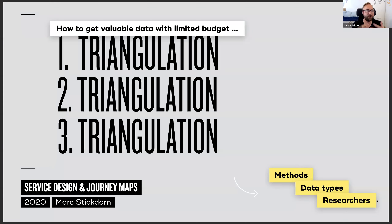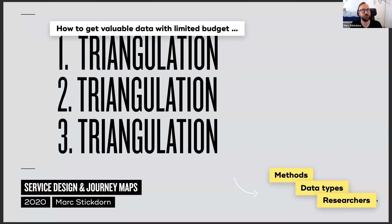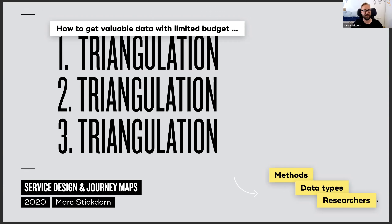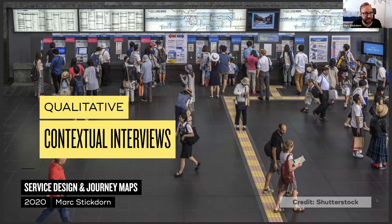Also use different data types: text notes, photos, videos, audio files, sketches, artifacts. The richer your set of data types, the more robust your research, because it allows researcher triangulation. We always talk about stepping into our customers' shoes but forget we're wearing our own. To level out researcher biases, you need different researchers. The only way another researcher can understand data someone else collected is by having a rich data set — not just written notes but photos, video, audio, and artifacts.